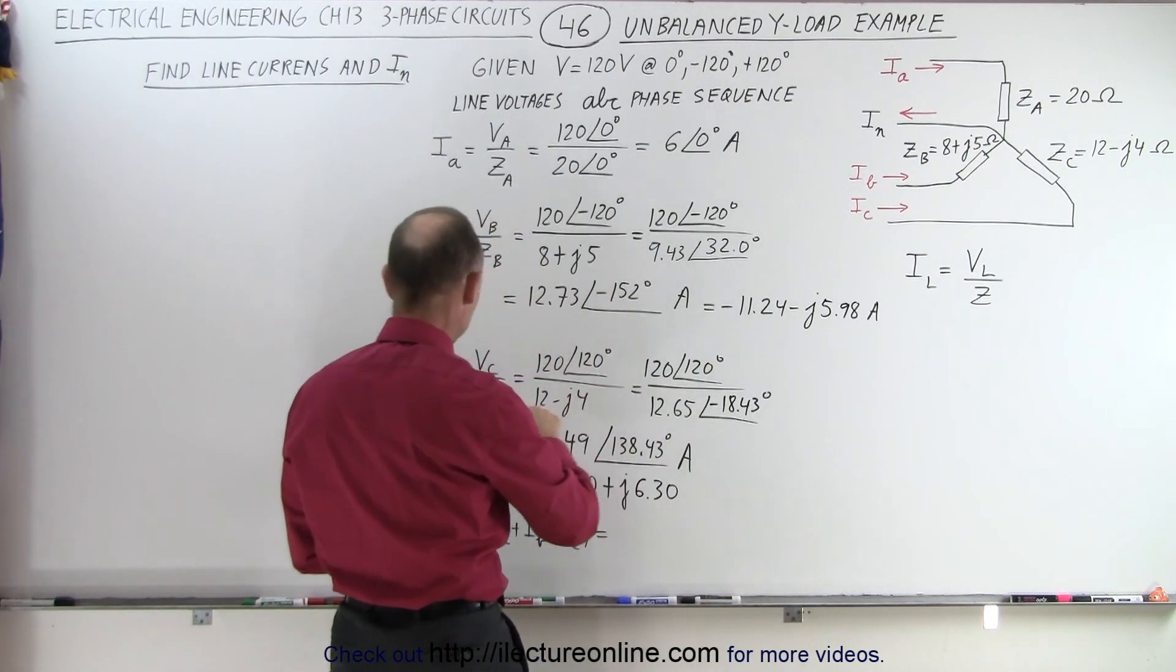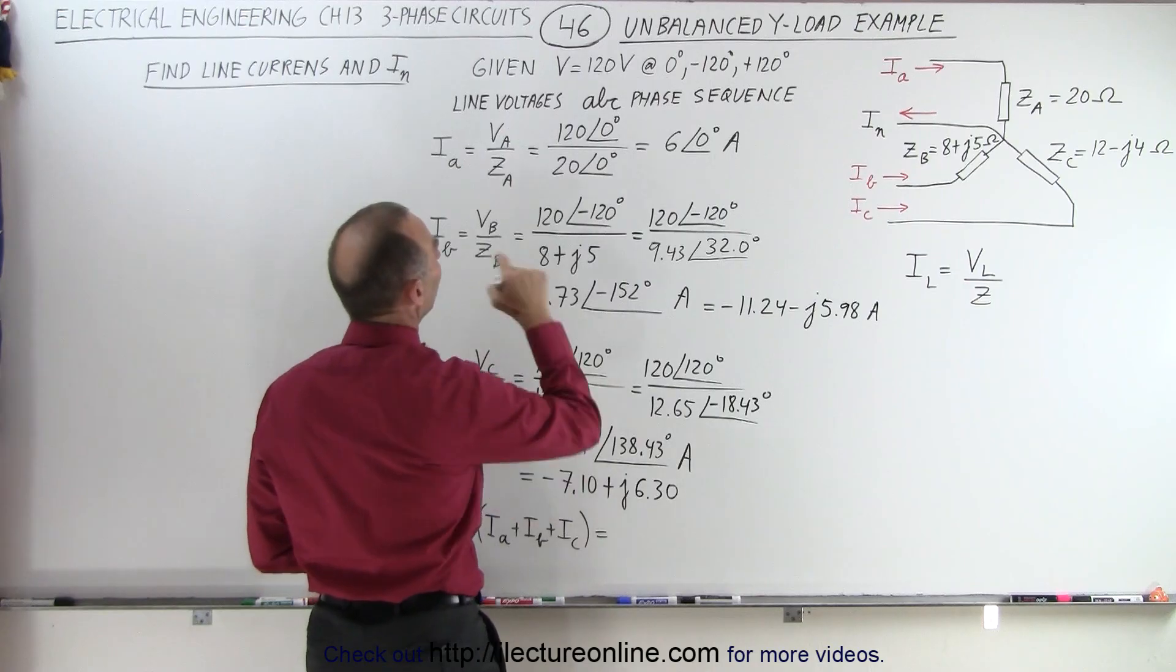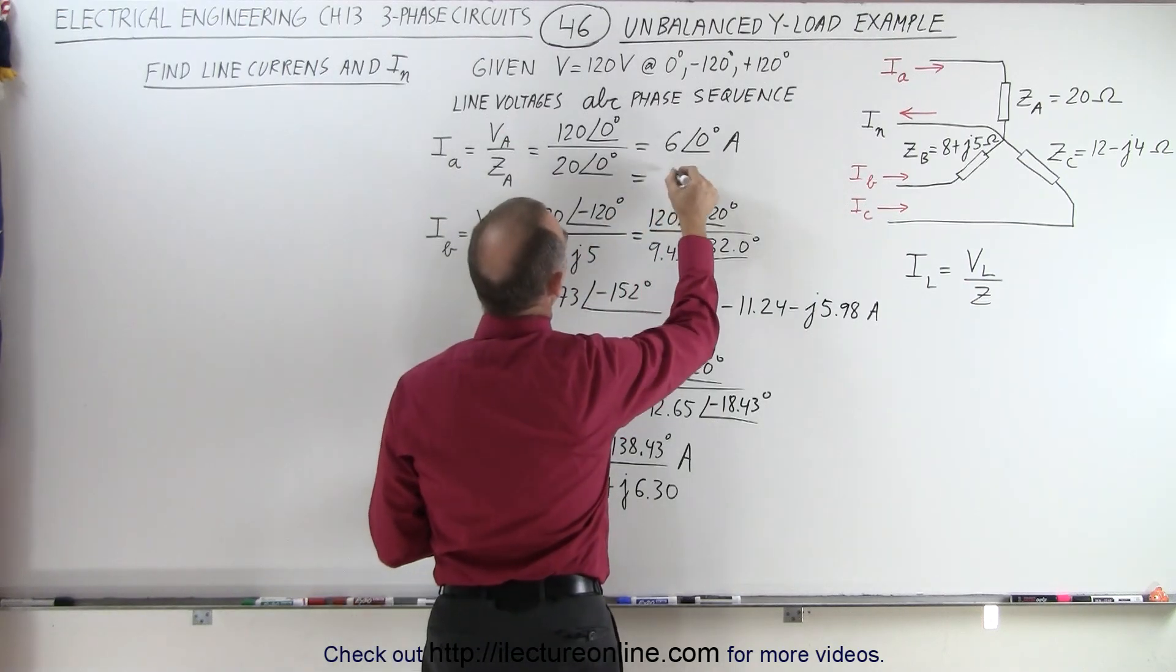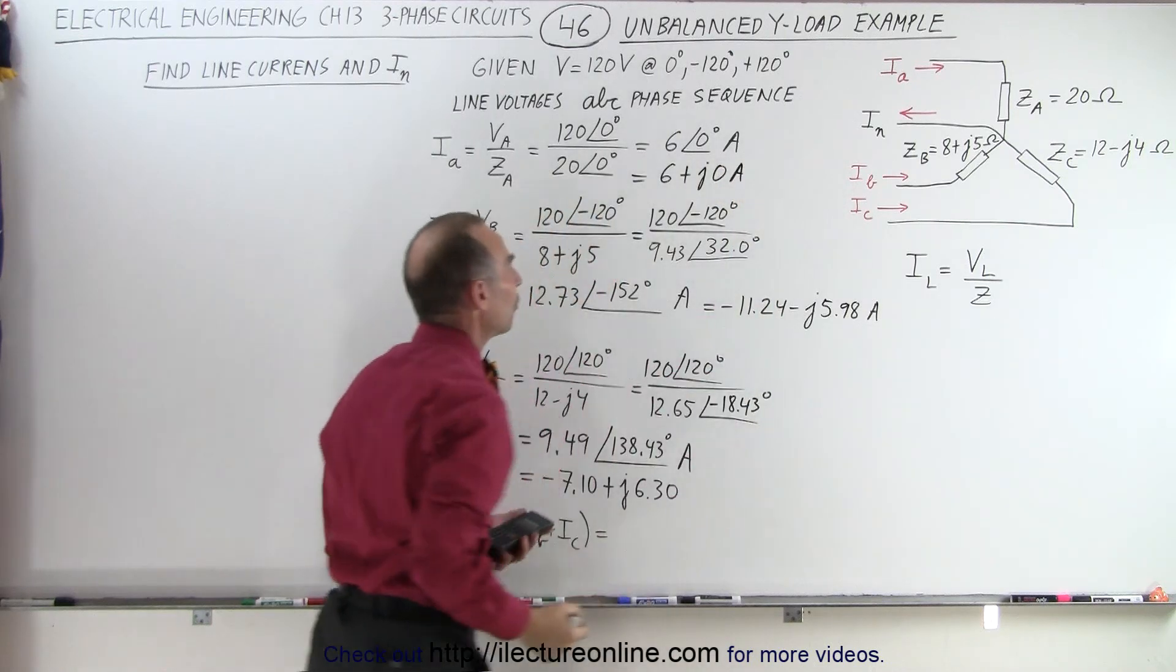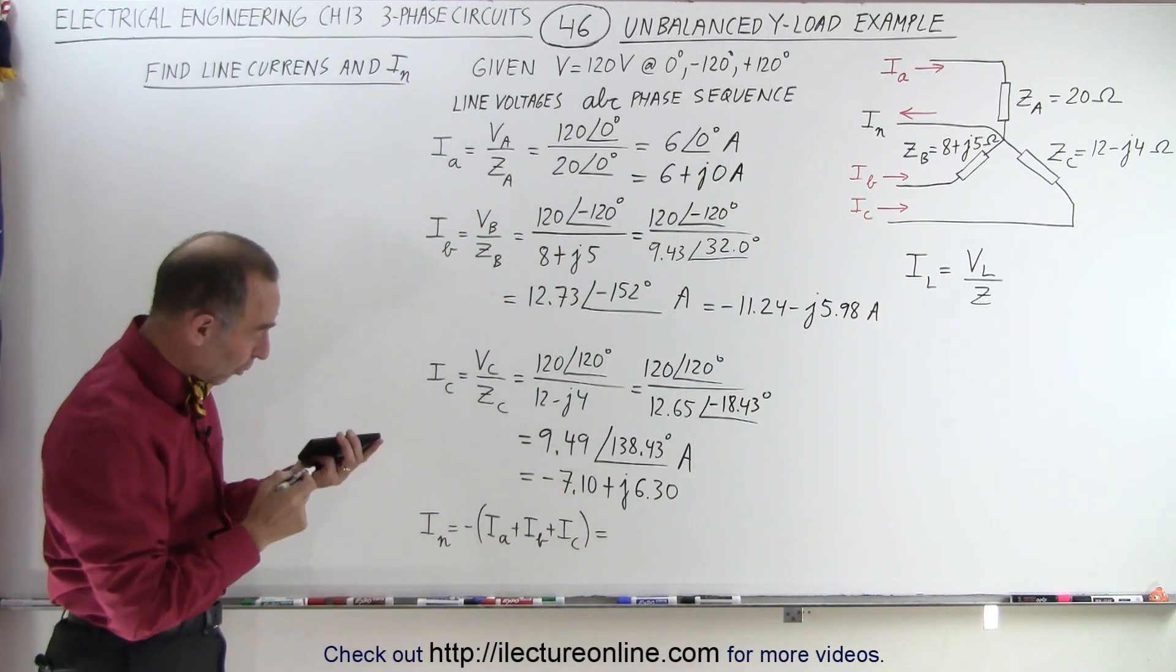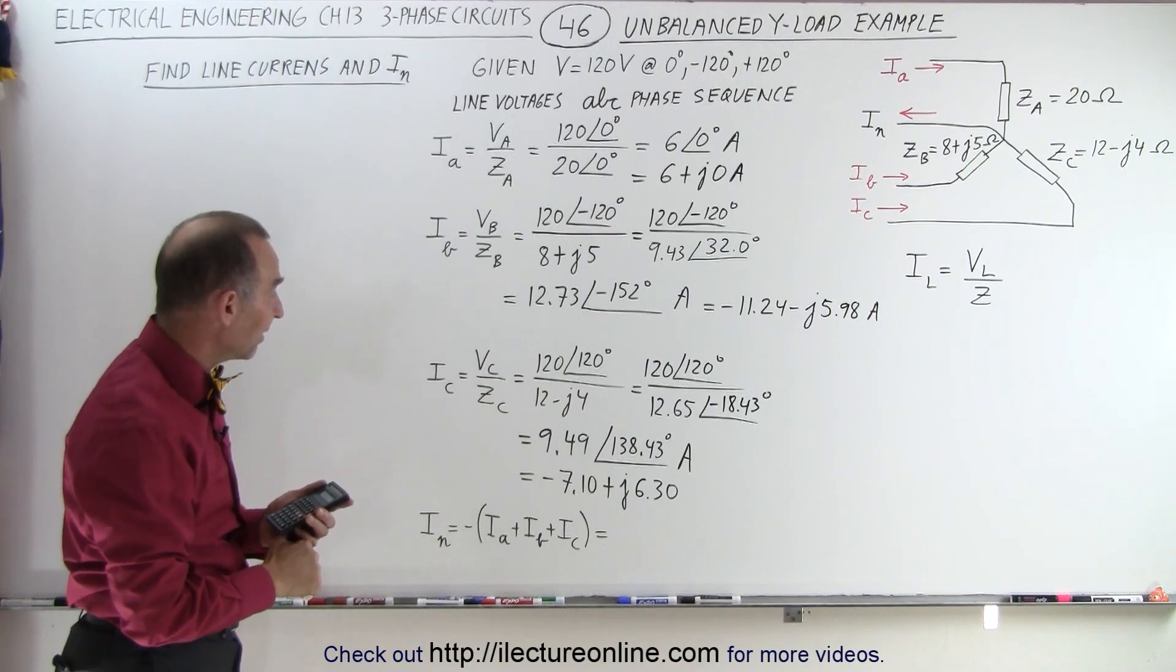So, we have the real imaginary parts of I B, I C, how about for I A, that would be equal to 6 plus J 0, in terms of amps, because there's no imaginary component there. So, those are the three line currents, I A, I B, I C.